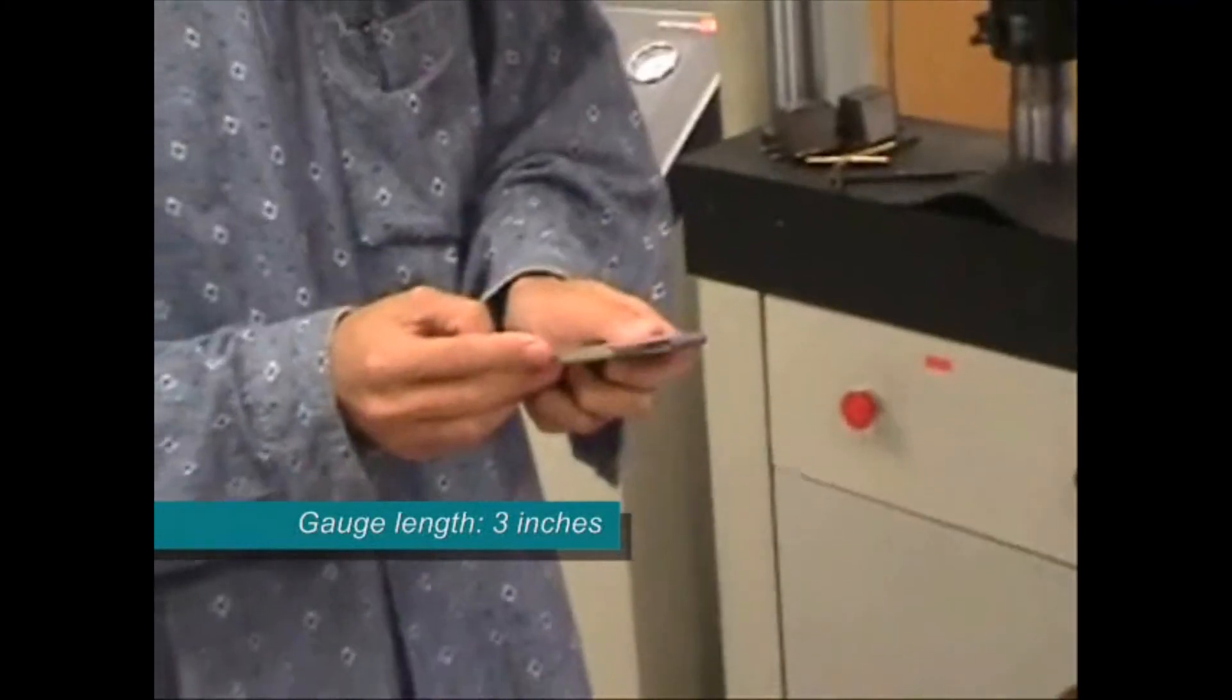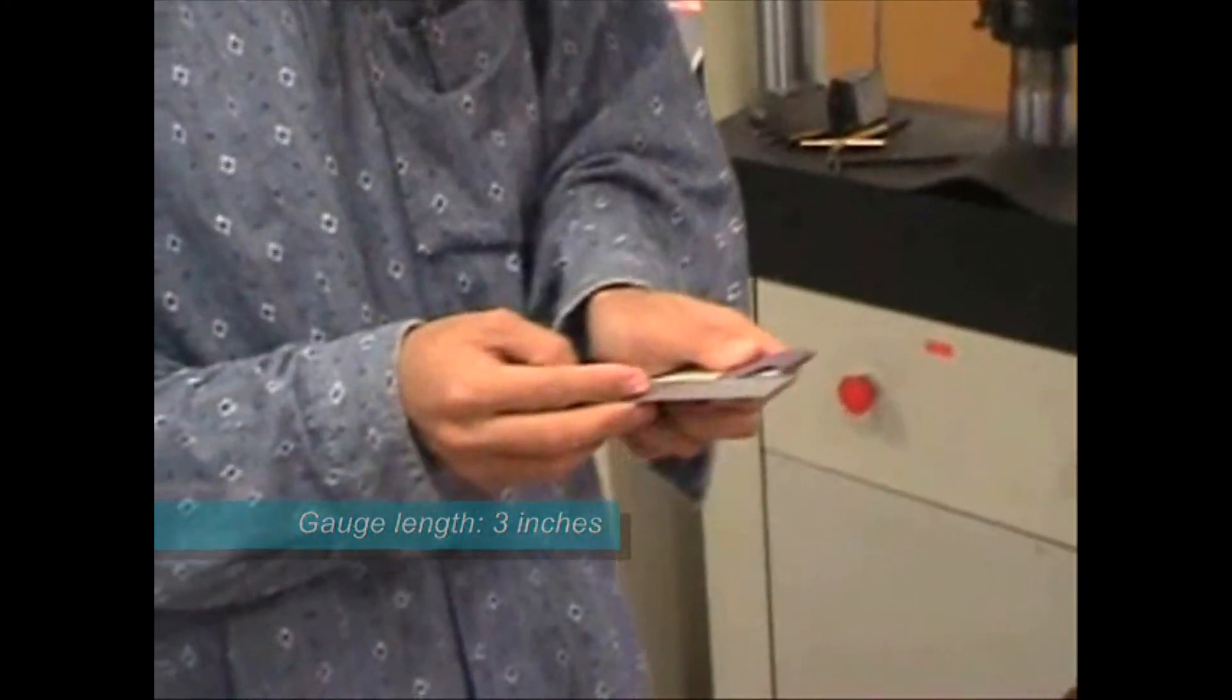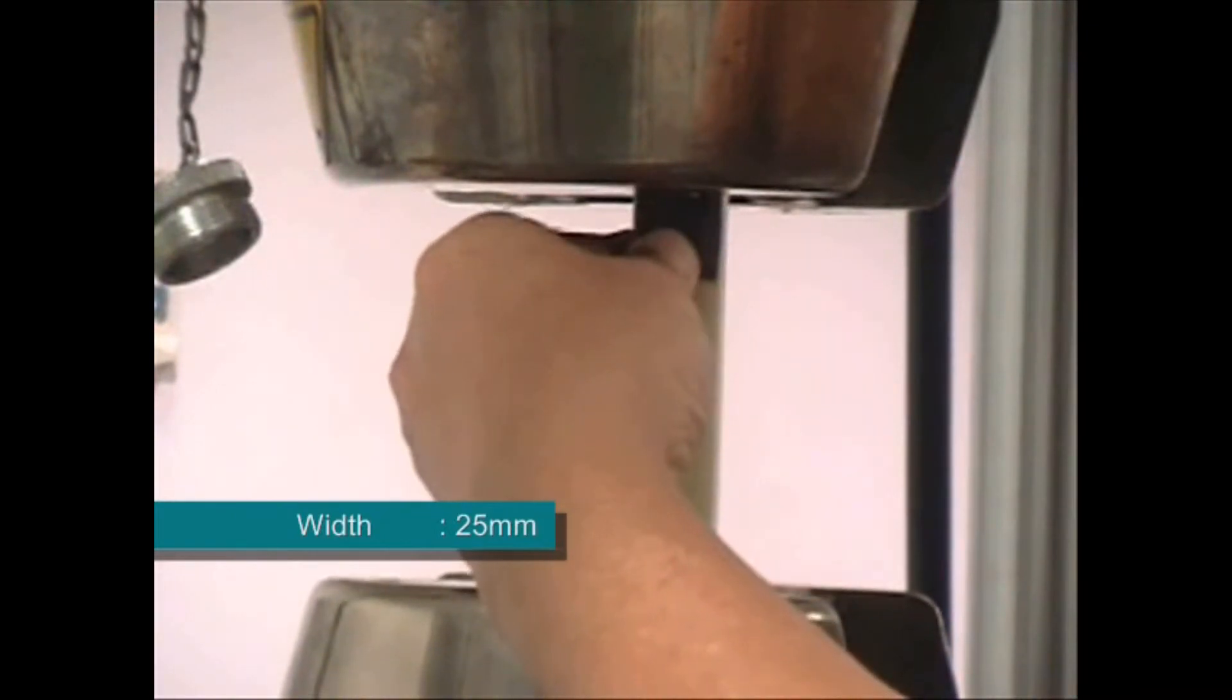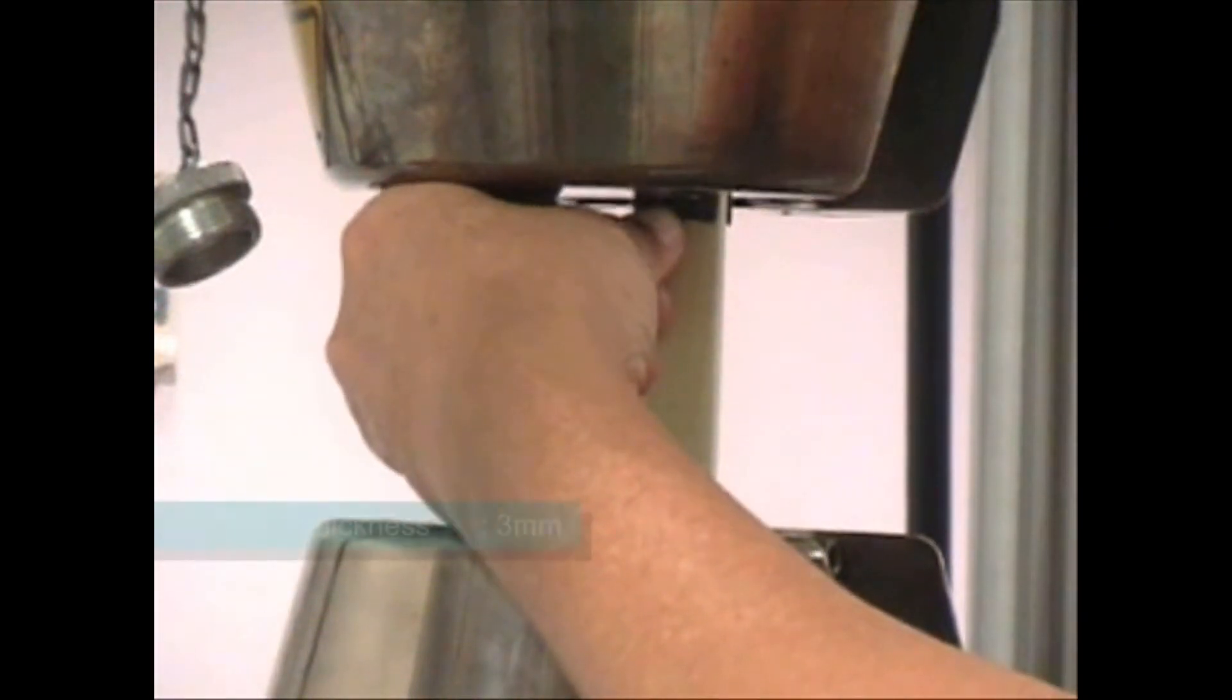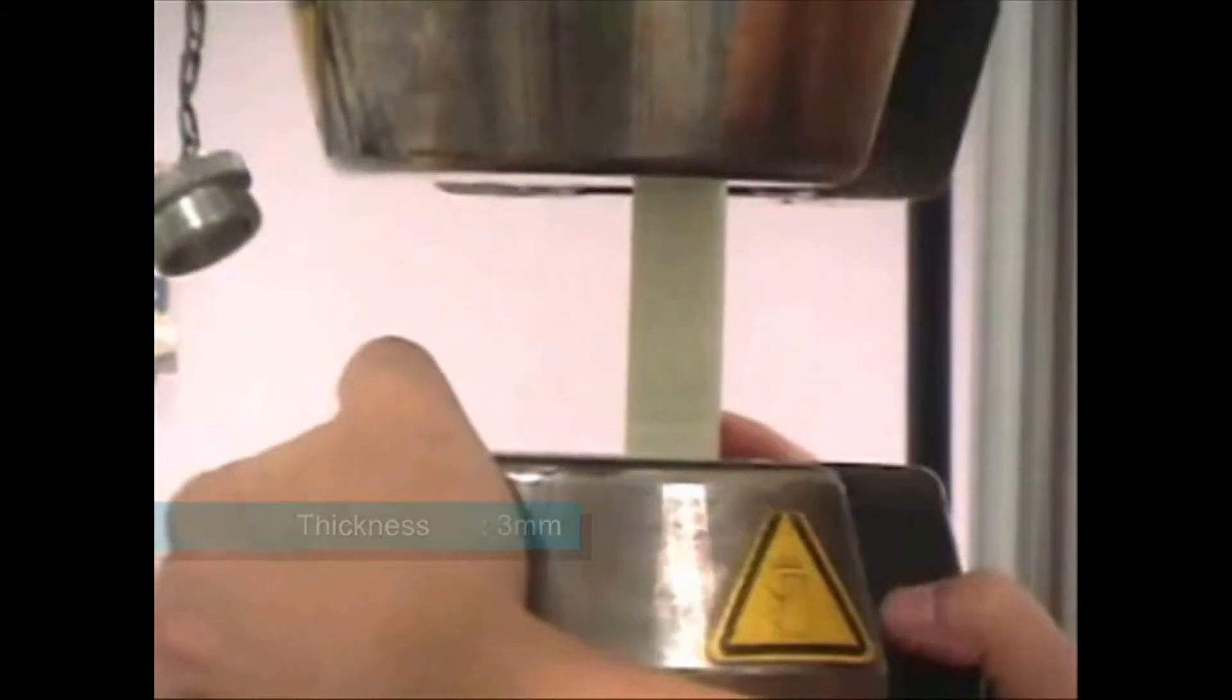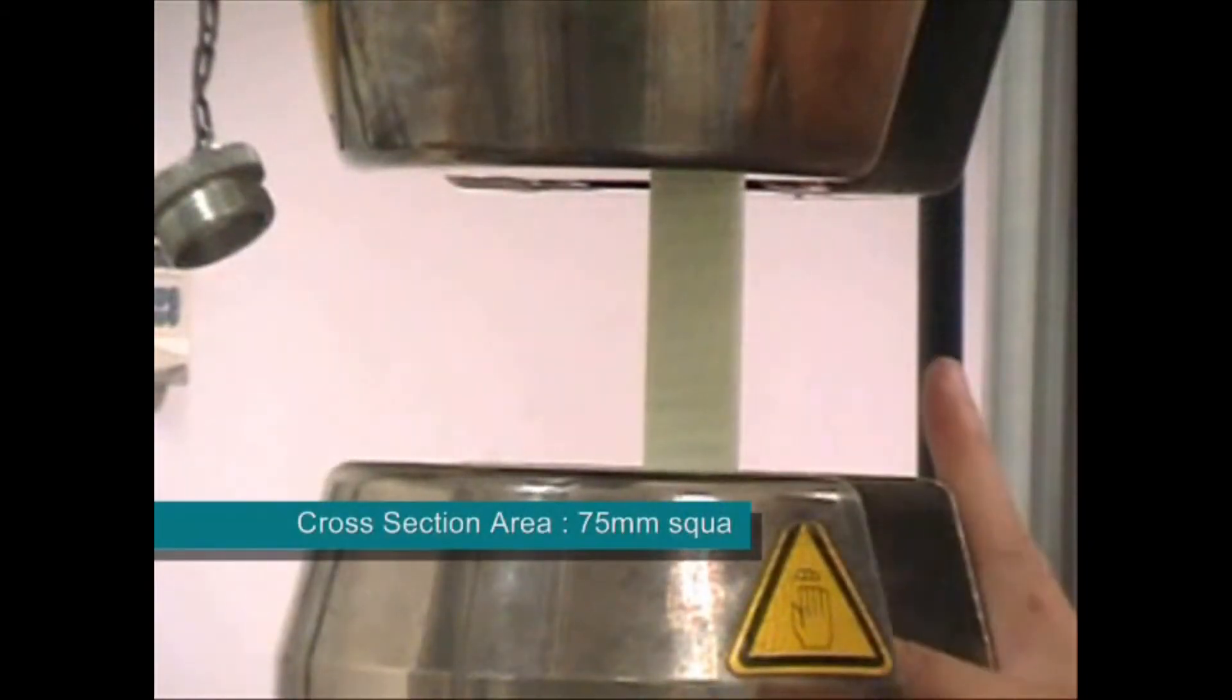The grip is basically emery paper or abrasive paper. Abrasive paper will help to grip the specimen very firmly, because in this kind of specimen it is possible that the specimen will slip from the grip.